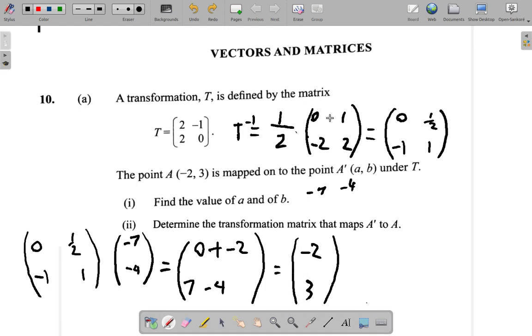Right, it is A. So at the top is negative 2, at the bottom is 3. So the transformation matrix that maps A prime to A is 0, half, negative 1, 1.